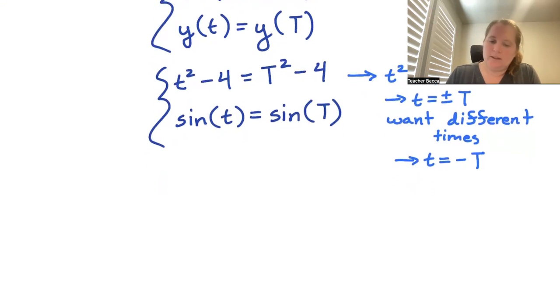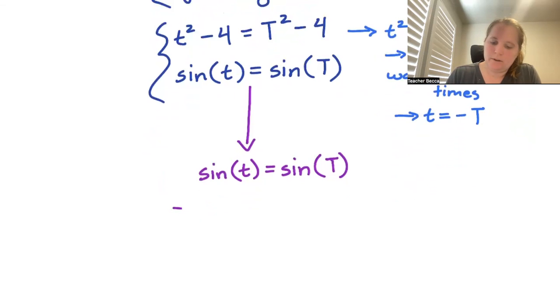So this means if we take our second equation, we have sin(t) equals sin(T), this means that we are looking for where does sin(-T) equal sin(T).